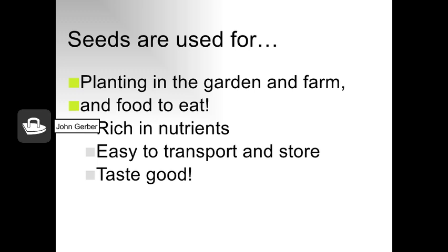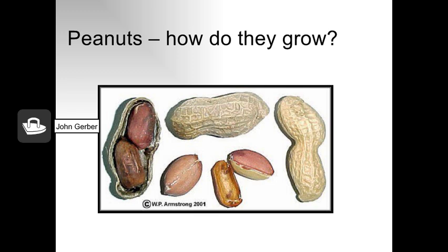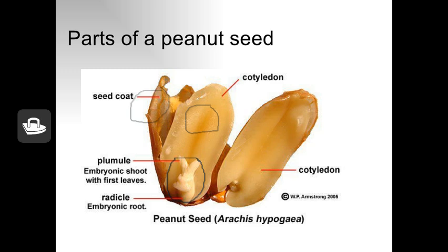Some seeds make pretty good human food. They're rich in nutrients, often sweet because they've got sugars, easy to transport and store, and many taste pretty good. Here's a dried peanut — the capsule that contains the peanut is a dried-up fruit, with two seeds inside. Next time you eat a peanut, take a look inside: sometimes there's a dry seed coat on the outside, the cotyledon contains all the nutrients, and you can often see the plumule and the little radicle inside the seed.